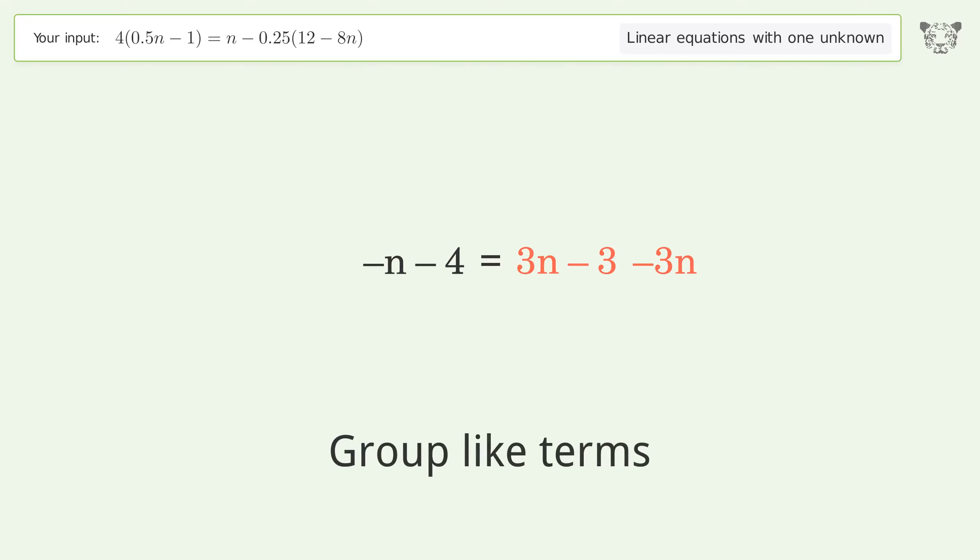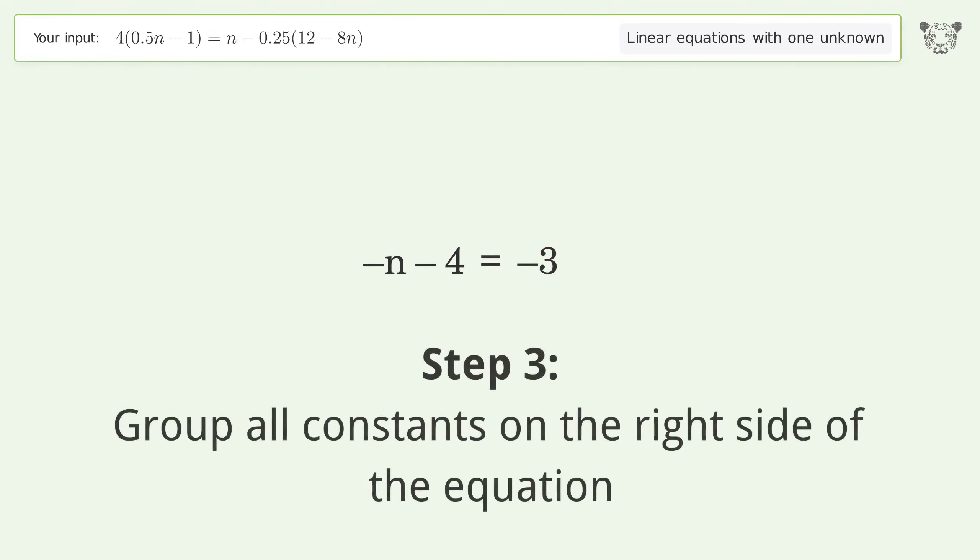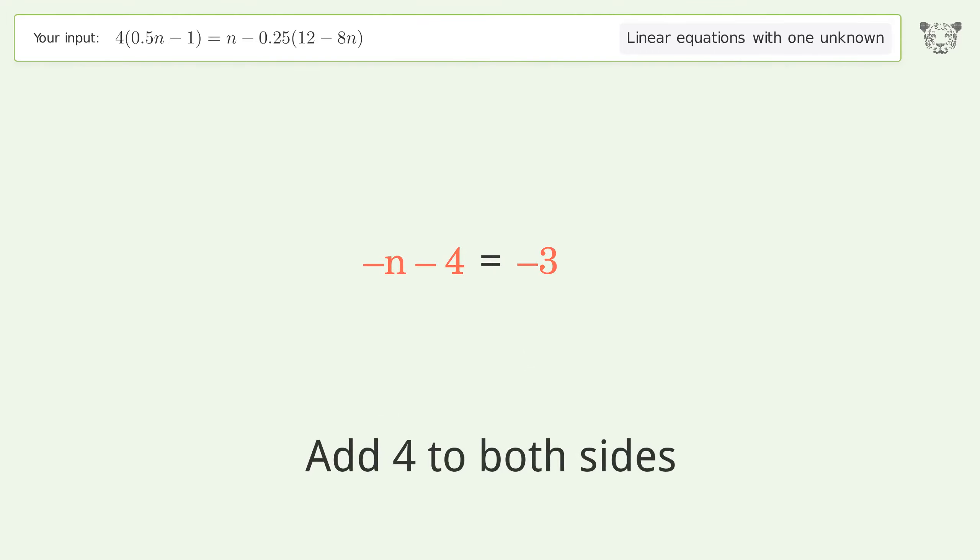Group like terms, simplify the arithmetic. Group all constants on the right side of the equation, add 4 to both sides. Simplify the arithmetic.